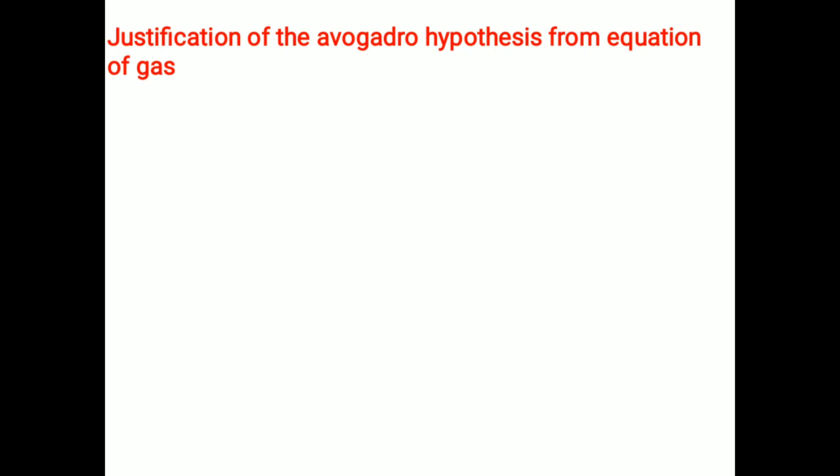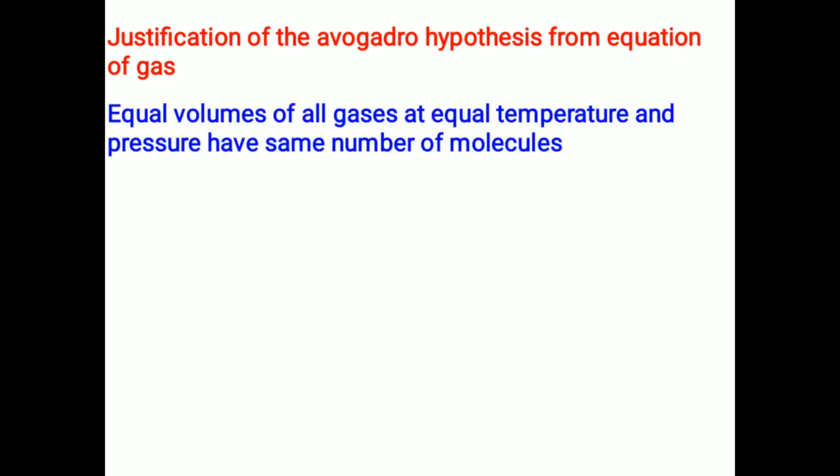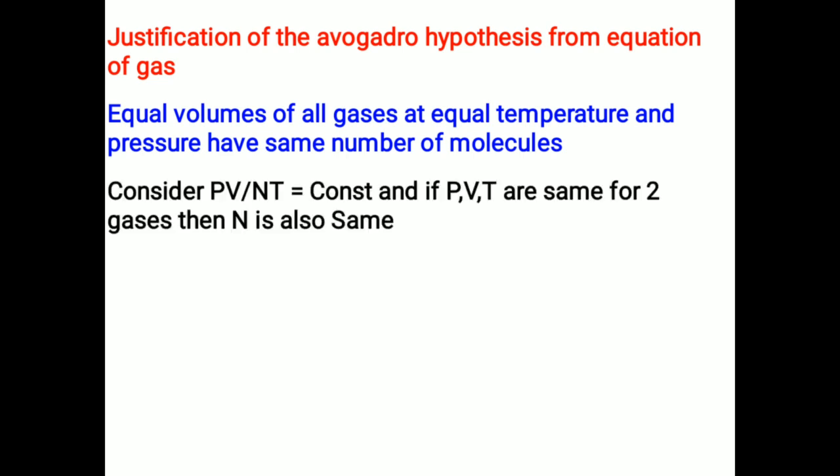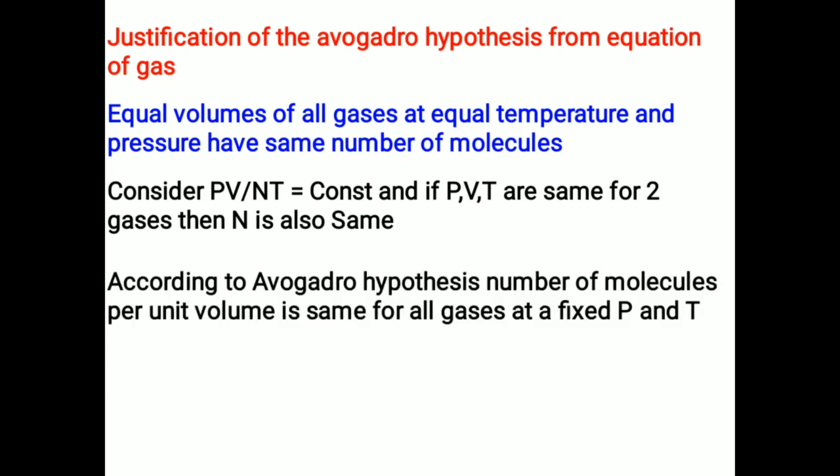Justification of Avogadro's hypothesis from the equation of gas. Avogadro's hypothesis states that equal volumes of all gases at equal temperature and pressure have the same number of molecules. Considering PV by NT equals constant, if P, V, and T are the same for two gases, then N, the number of molecules, is also same. Number of molecules per unit volume is same for all gases at a fixed pressure and temperature. Avogadro number Na equals 6.023 × 10²³, and it is a universal value.